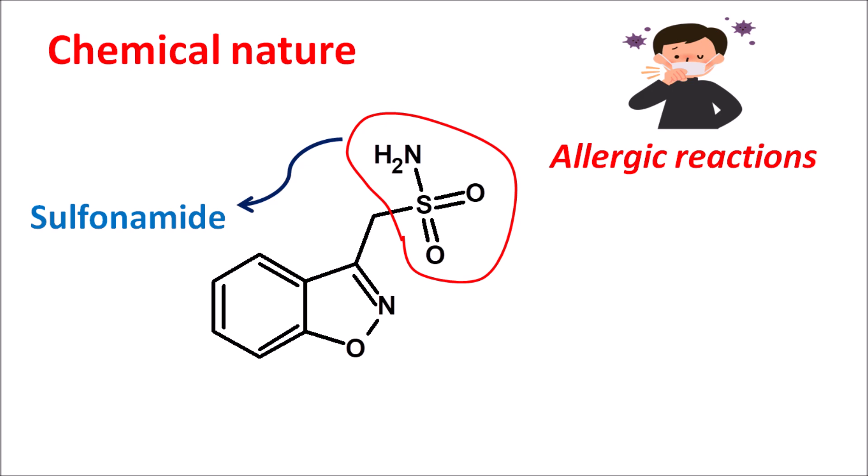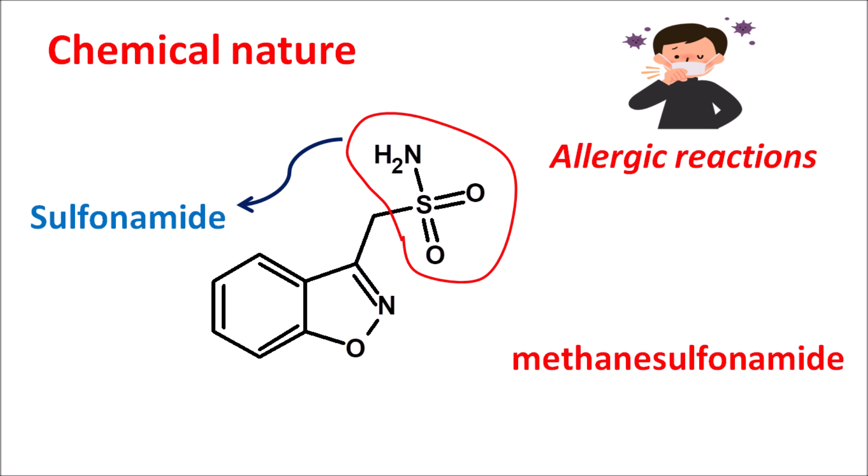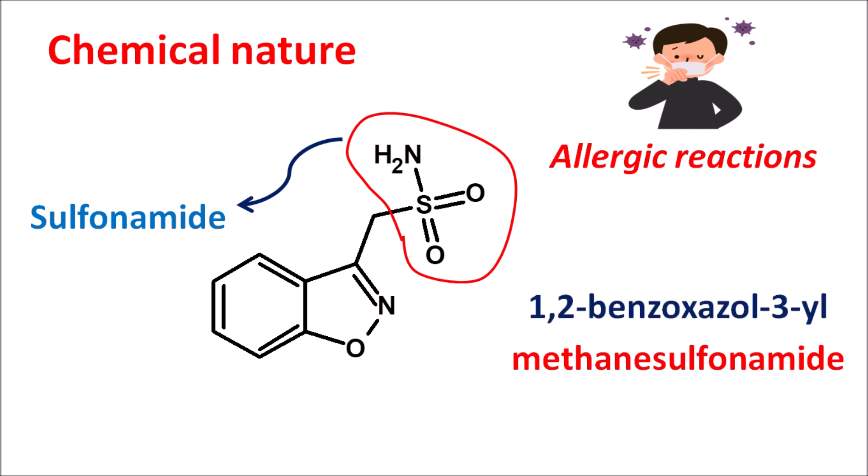If we write the IUPAC name of this drug, it is simply a methanesulfonamide derivative. So we can write the suffix as methanesulfonamide. To this methanesulfonamide, one heterocyclic ring system is attached — with oxygen at the first position and nitrogen at the second position. This is nothing but 1,2-benzo-oxazole-3-yl, attached at the third position. That is the simple name of zonisamide.